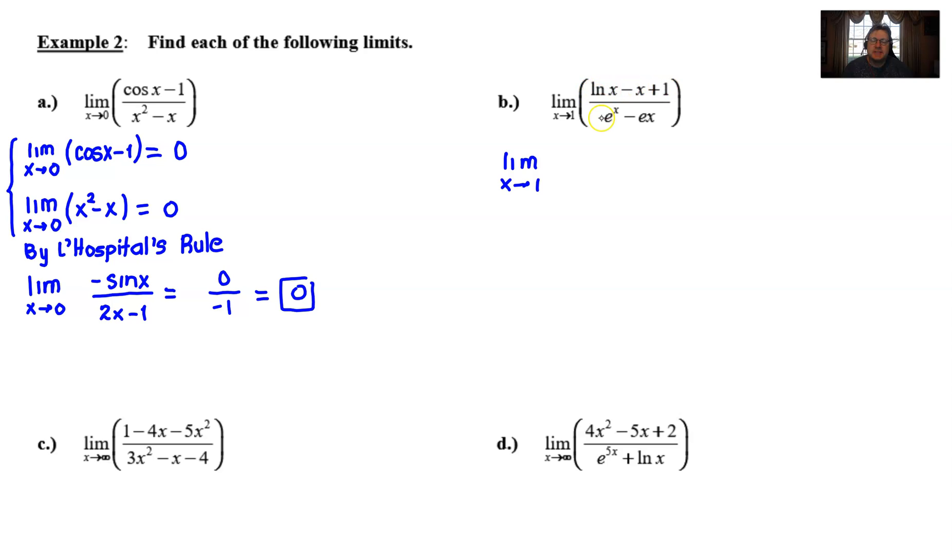If we tried to plug 1 in for the top and the bottom, you would get 0/0. When we take the derivative of the top, we would get 1/(x-1). When we take the derivative on the bottom, we get e^x - E. You want to make sure you understand the derivative of E times x does not require the product rule because E is a constant. If we plug 1 in for x, we are going to get a 0 on top and a 0 on bottom. I'm not kidding you this time.